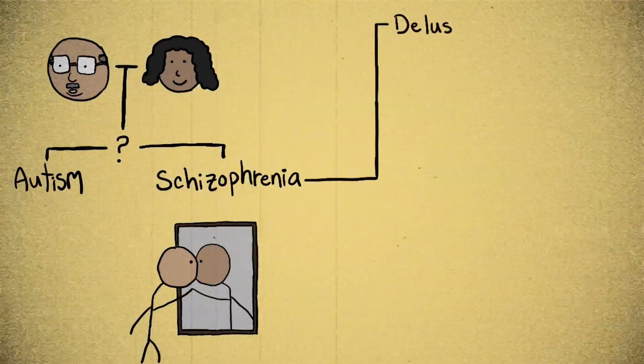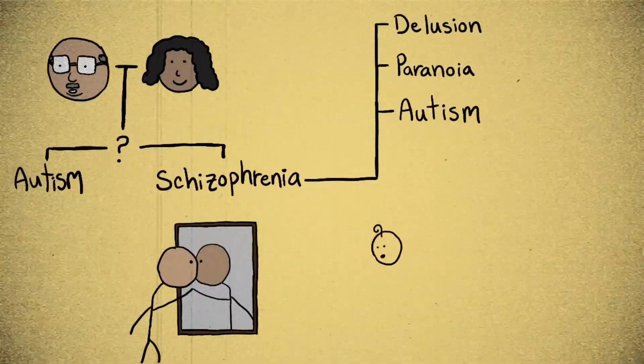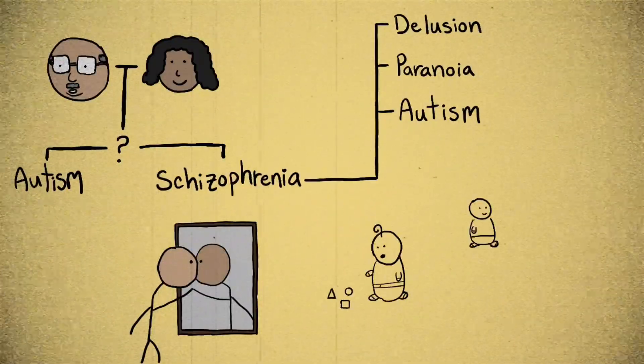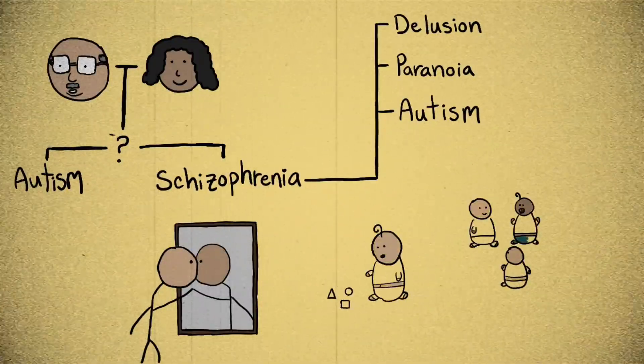Initially the word was used to describe a feature of schizophrenia, and it was only in 1943 that psychologist Leo Kanner associated the word with what we now know as autism.